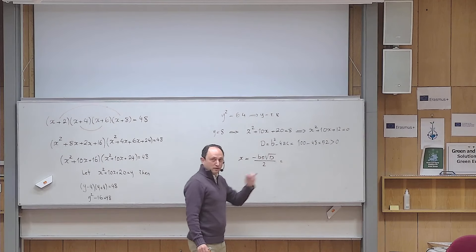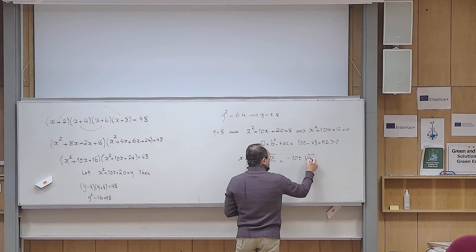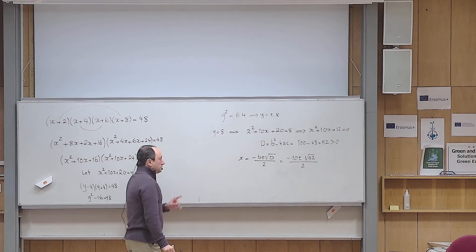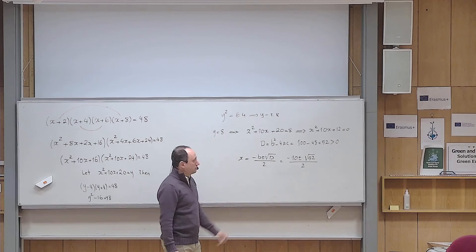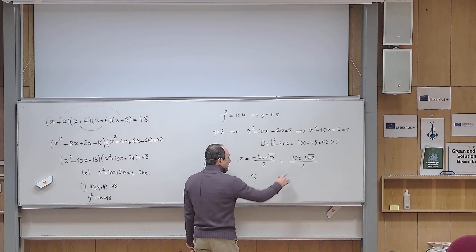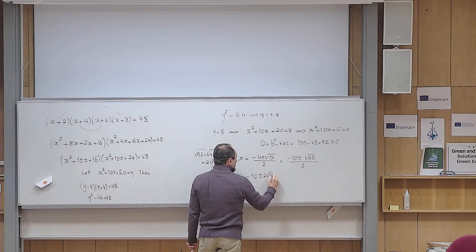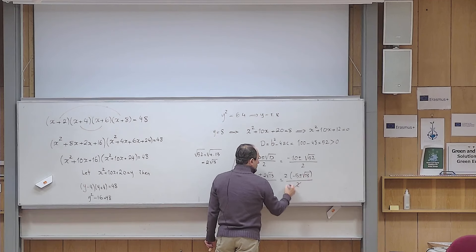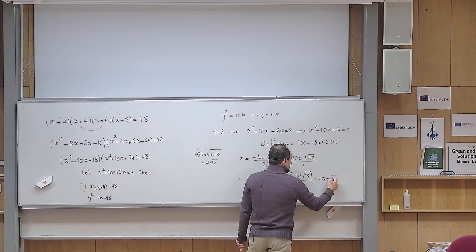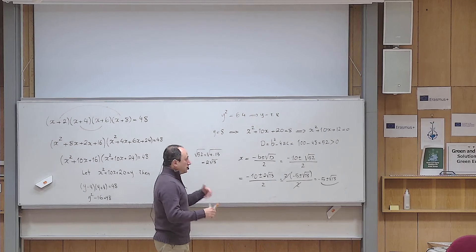Since √52 = √(4 × 13) = 2√13, we get x = (-10 ± 2√13) / 2 = -5 ± √13. So the two solutions are x = -5 + √13 and x = -5 - √13, which are exactly the answers stated at the beginning. However, we must still check the second case y = -8 to confirm there are no additional real solutions.